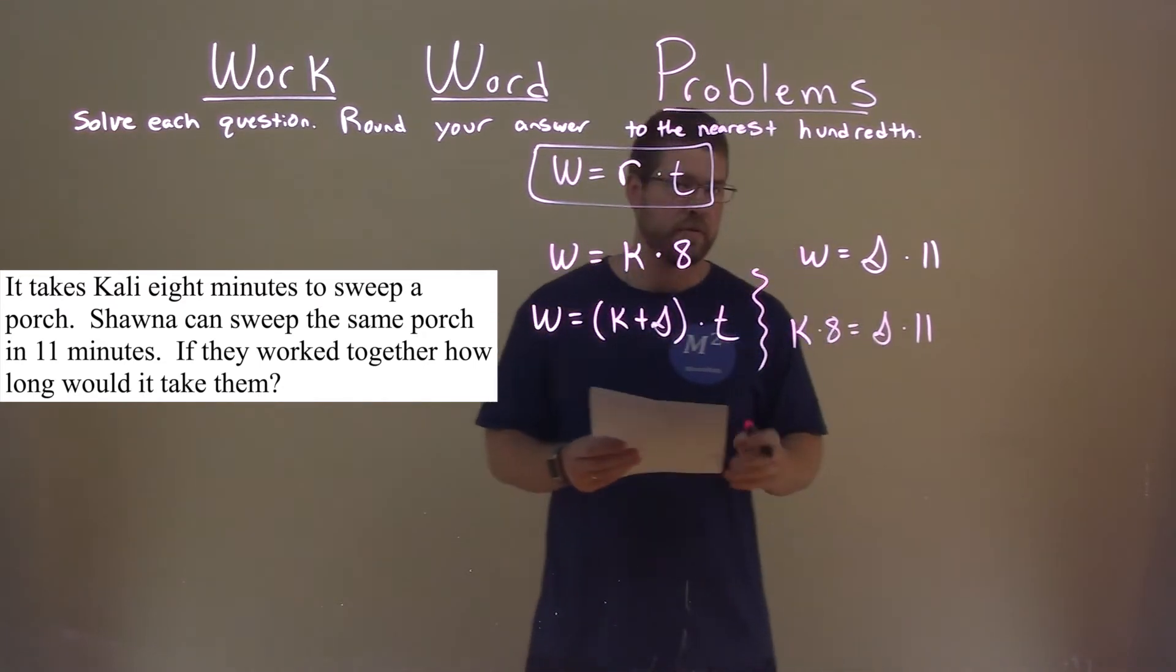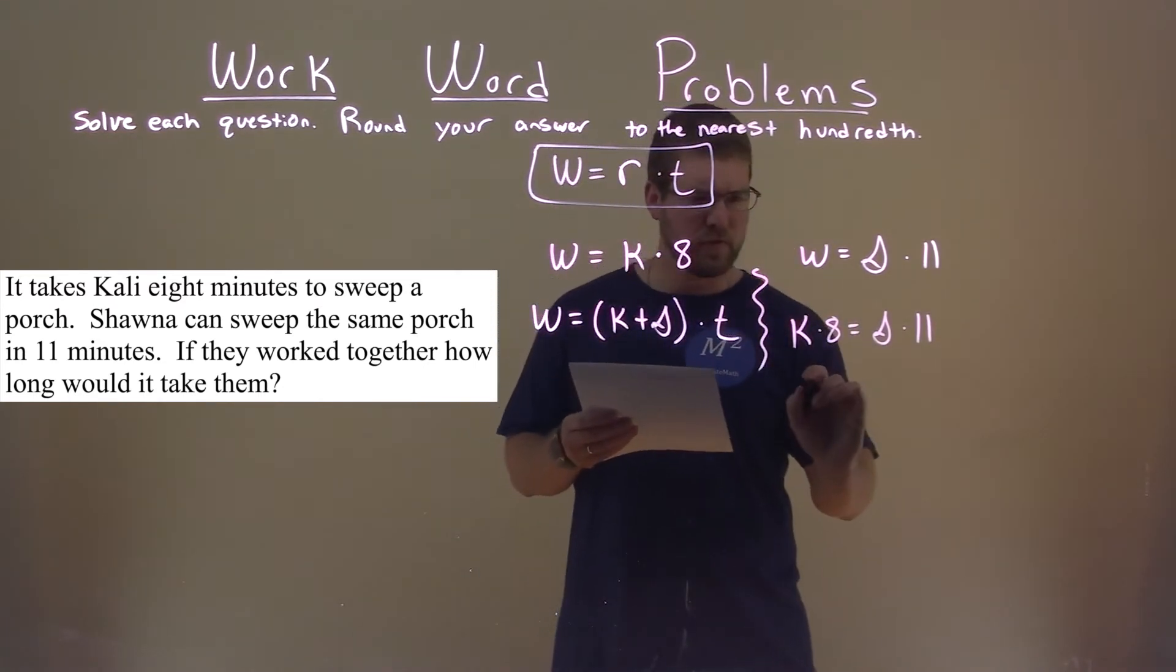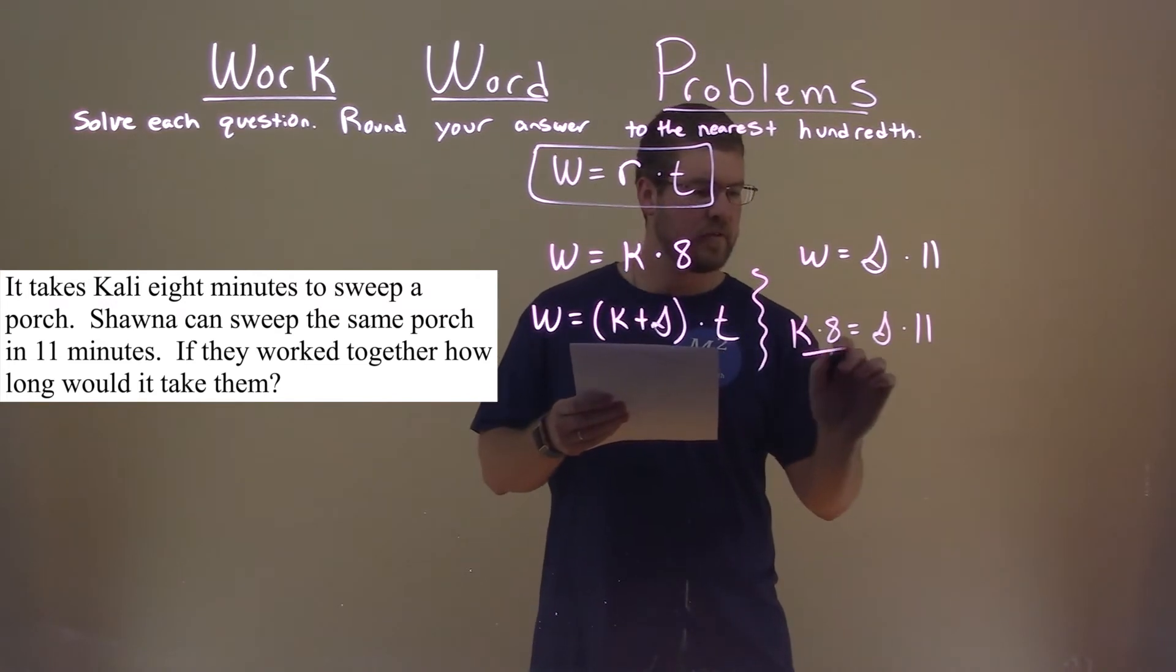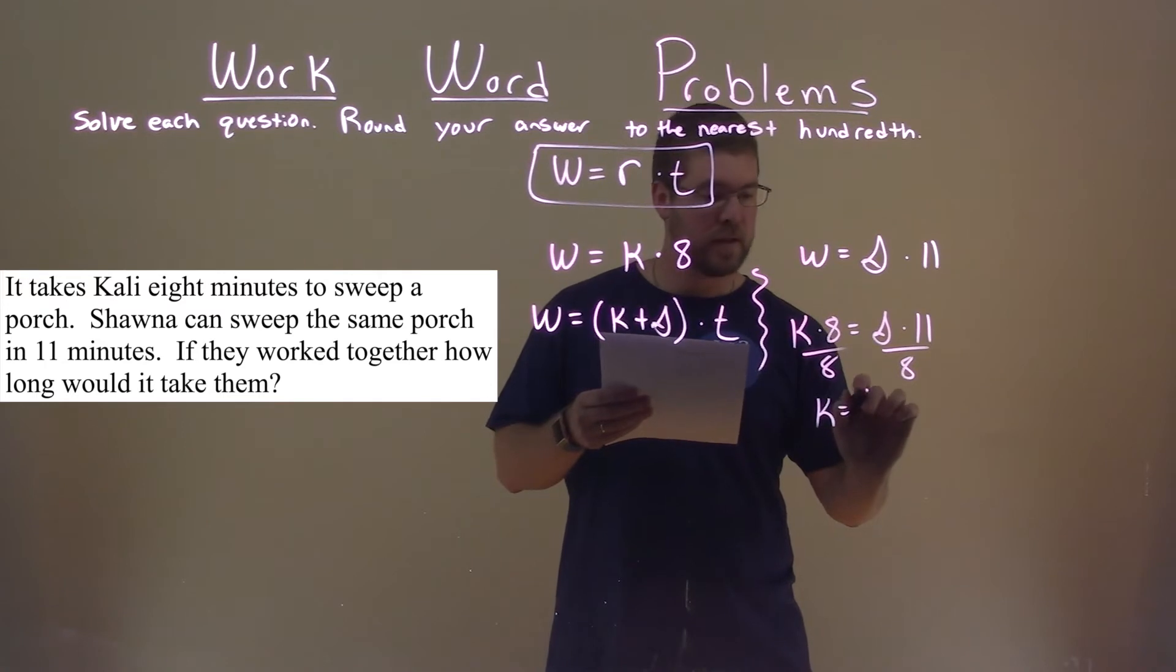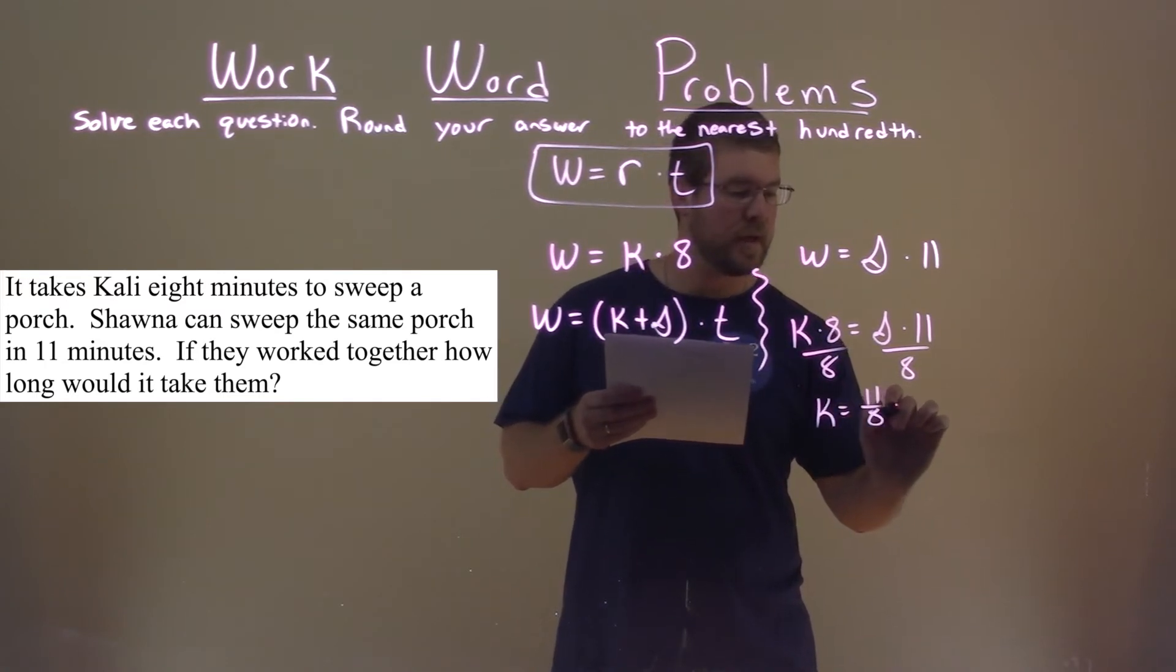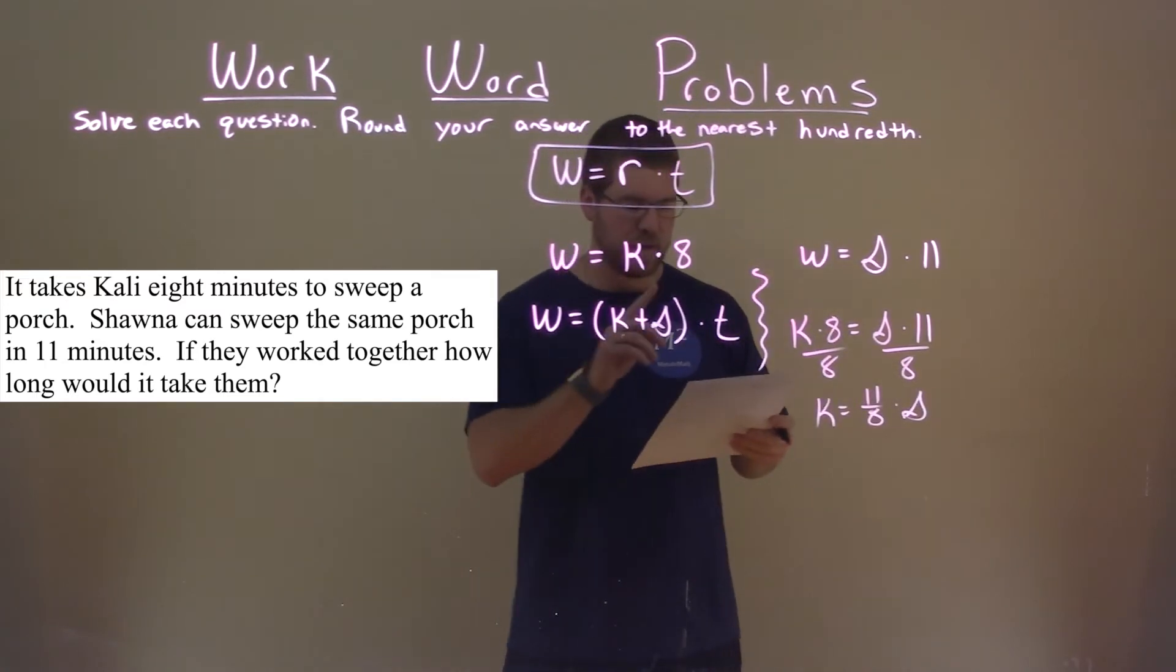And now we're going to use this to solve for K. So Kali's rate, we divide both sides by 8, and I'm going to reorder this, but K equals 11/8 times S. And that's going to be crucial.